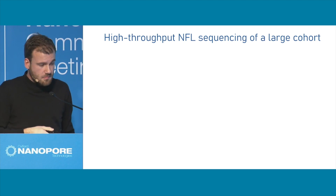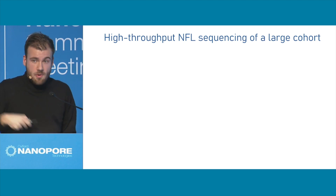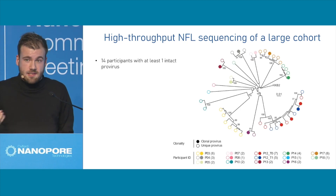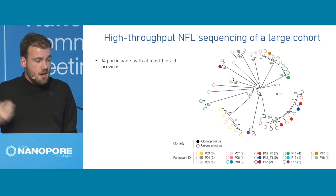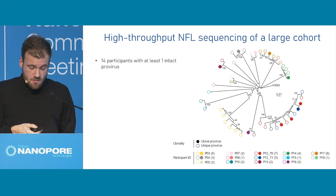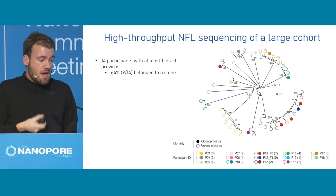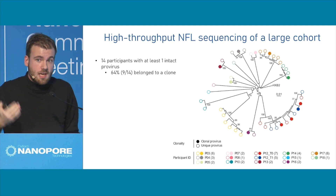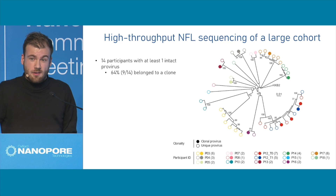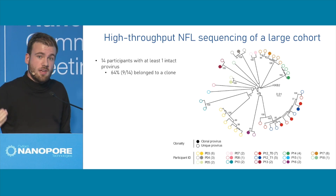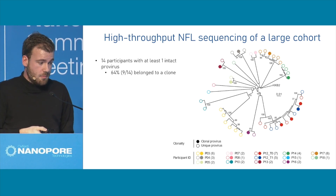We can identify intact sequences, which may be the relevant fraction causing persistence. We can also do phylogenetics — taking all the intact 9 KB sequences and building a large tree, as you can see here. We have 14 participants with at least one intact provirus, and 9 out of those 14 have intact clones. Those are clonally expanding cells carrying an integrated HIV-1 copy that are persisting, and are probably why HIV is so hard to get rid of — it just lingers on and remains in your body.